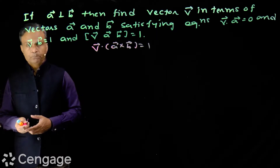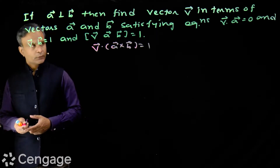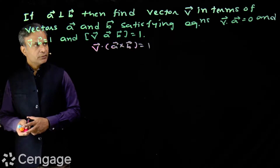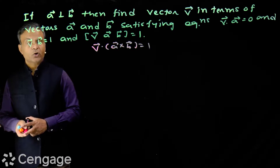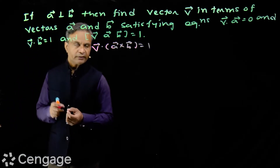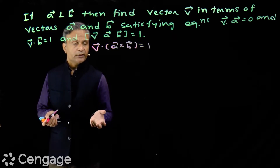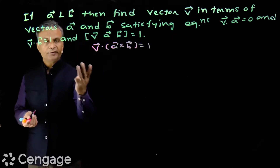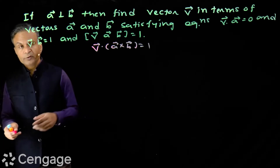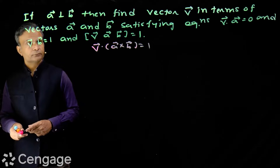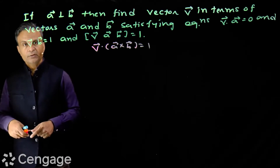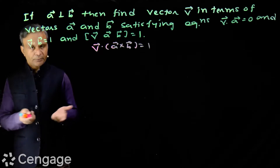What will happen? We can express any vector in this space as a linear combination of three non-coplanar vectors. We want to express any vector in this space, so we need three non-coplanar vectors. Do we have three non-coplanar vectors here? We have vectors a and b — a and b are perpendicular, non-collinear vectors. These vectors will define a plane.